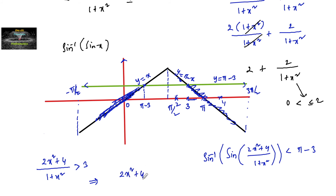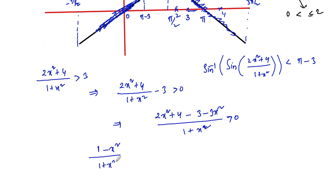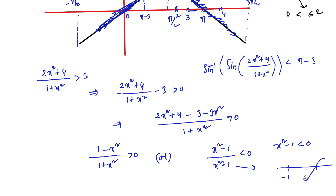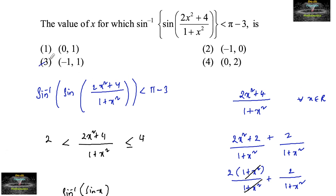This implies (2x²+4)/(1+x²) − 3 > 0, which gives (2x²+4−3−3x²)/(1+x²) > 0, that is (1−x²)/(1+x²) > 0, or equivalently (x²−1)/(x²+1) < 0. Since x²+1 is always positive, we need x²−1 < 0, so x² < 1, giving x ∈ (−1, 1).